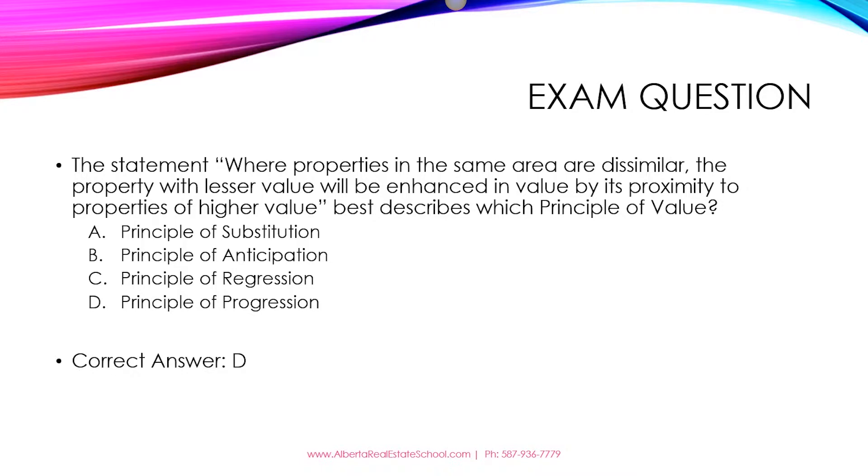And the correct answer is D. In this case, we're looking at properties that are not similar, first of all, and there are properties that are higher in value in this area. In this case, the property that is smaller or lower in value will actually be priced higher because it's in the area where other properties are higher in value.